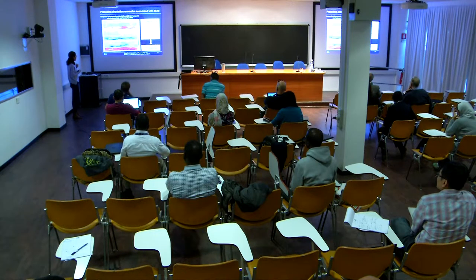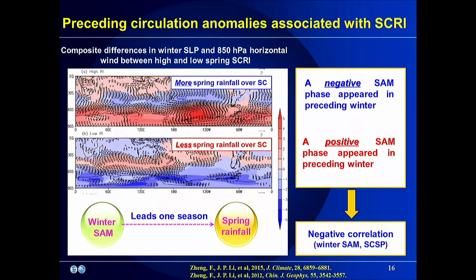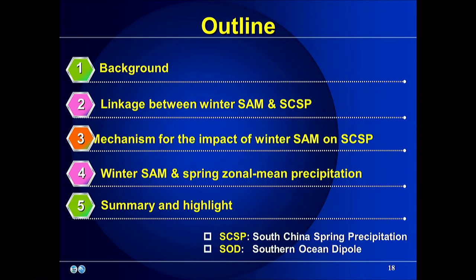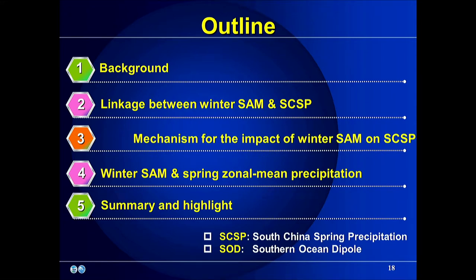The question that comes to mind is what is the mechanism for this leading correlation? This is interesting because the SAM signal leads the rainfall anomaly by one season. Considering that atmospheric signal persistence is usually not long enough to maintain one season, we turn our attention to the underlying surface — especially the ocean. This leads us to the next part: mechanism for the cross-seasonal influence.